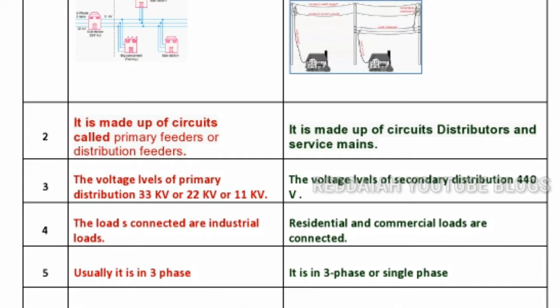The primary distribution system is usually in 3-phase, whereas the secondary distribution system can be 3-phase or single phase.